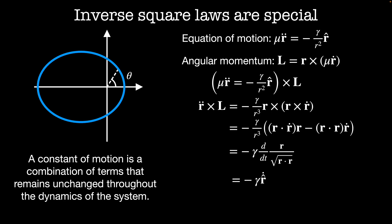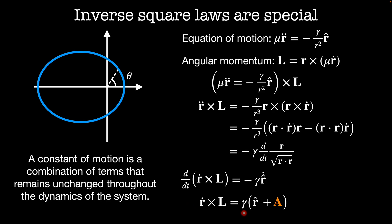Our goal now is to rewrite the left-hand side to make it look like it's a derivative with respect to time, then we can use that to find a constant of the motion. Since angular momentum is conserved, its rate of change is zero, which means the only time derivative needs to act on r-double-dot. So we can pull out a factor of the time derivative and get d/dt of r-dot cross L equal to minus gamma times d/dt of r-hat. Integrating both sides, r-dot cross L equals gamma times r-hat plus a constant of integration, which we'll call A. Then our constant of the motion A is equal to r-dot cross L divided by gamma minus r-hat.